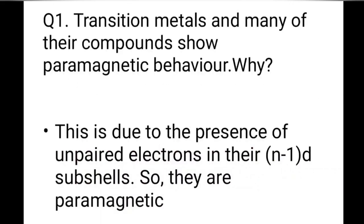Question number 1: Transition metals and many of their compounds show paramagnetic behaviour — why? This is due to the presence of unpaired electrons in their (n-1)d subshells, so they are paramagnetic.